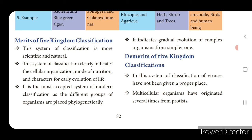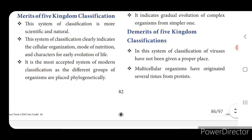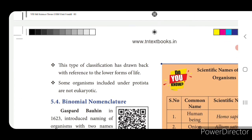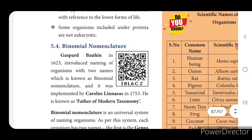Demerits of five kingdom classification: viruses have not been given a proper place in the system; multicellular organisms have originated several times from Protista; this classification has drawbacks with reference to the lower forms of life, and some organisms included under Protista are not eukaryotic.